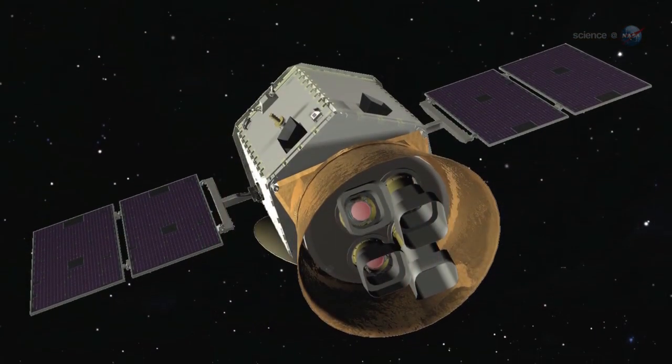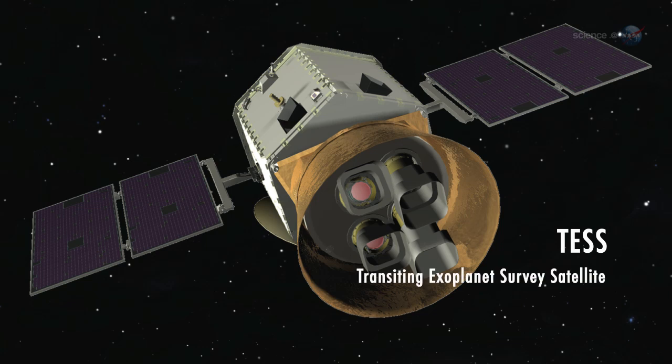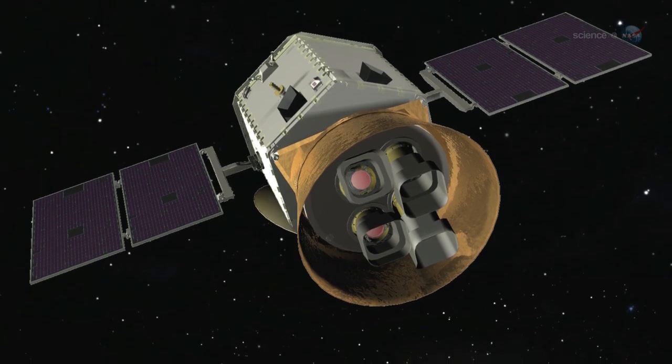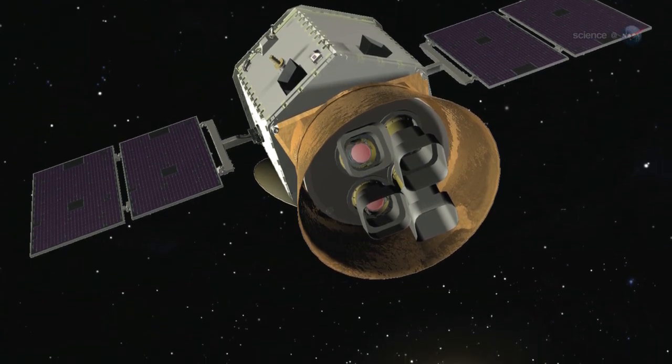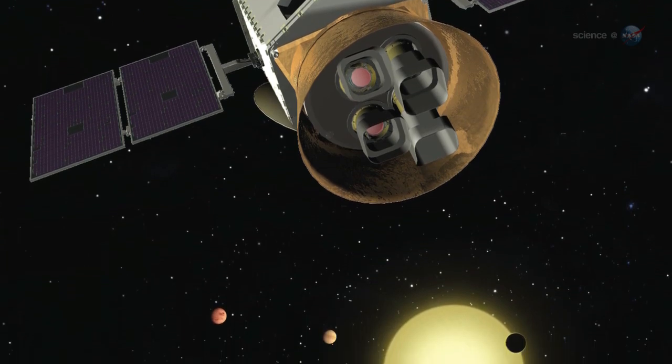NASA is also considering an observatory named TESS, the Transiting Exoplanet Survey Satellite. Supported in part by Google, the MIT-led mission is specifically designed to find exoplanets in the local galactic neighborhood. TESS would study hundreds of stars within 50 light-years of Earth, close enough to study in some detail.